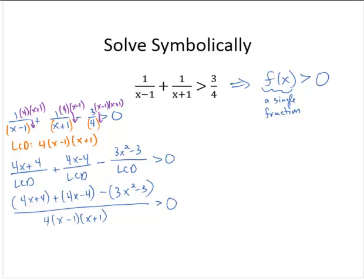So let's see. I have an 8x. This plus 4 minus 4 goes away. I would have a negative 3x squared, a plus 8x, and a plus 3 over the common denominator, 4 by x minus 1 by x plus 1. All right, so now, and we're still comparing that to 0.